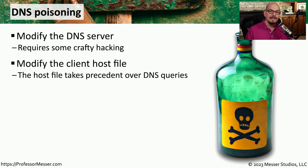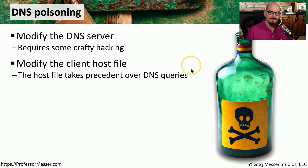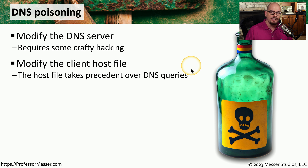Something more accessible to the attacker would be to modify the host file on the client computer. They would need to have access to this client computer, and in most cases they would need elevated rights to have permission to change this file. This local host file contains a list of fully qualified domain names and IP addresses, very similar to what you would find on a DNS server. But instead of querying the DNS server, the local machine simply looks through its local host file, and if the resolution is found there, it uses that instead of making a query to the DNS server.